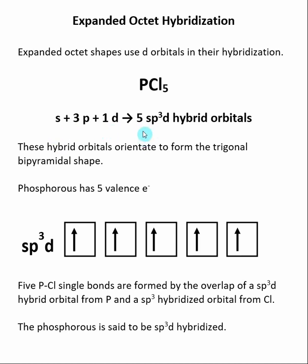The sp3d represents that these hybrid orbitals are made from the combination of an s, 3ps, and a d orbital. It's these 5 hybrid orbitals that orientate to form the trigonal bipyramidal shape that we get when we have 5 electron groups around the central atom as predicted by VSEPR.